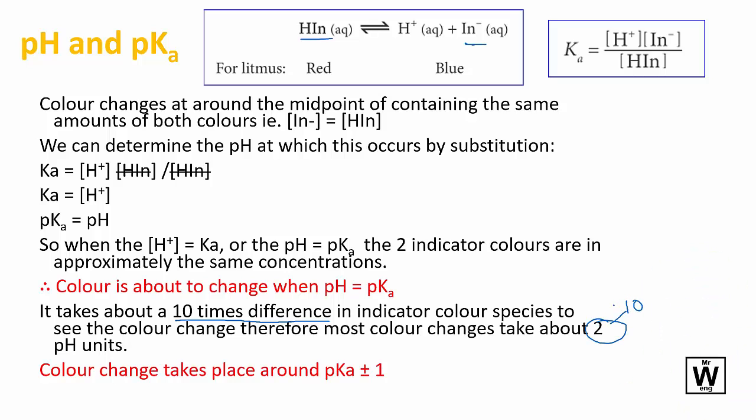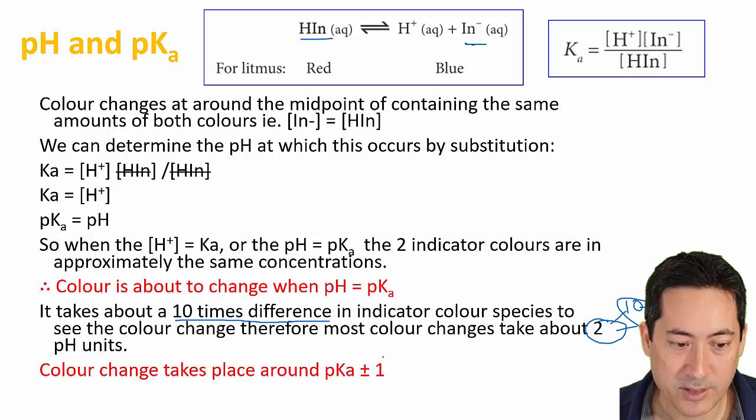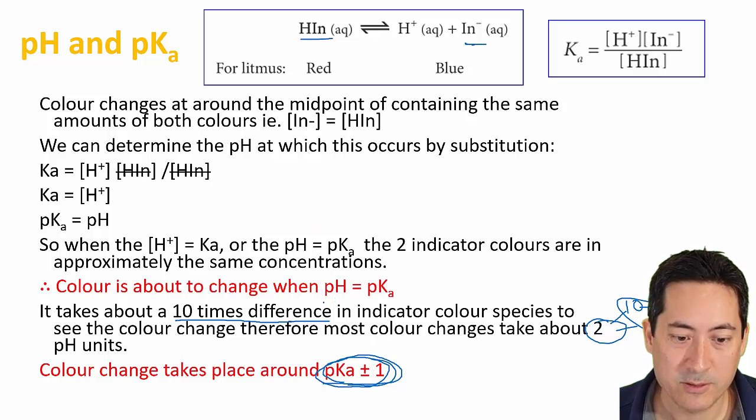You'll see the color change within two pH units. The trick is you need to look at the pKa of the acid-base indicator, and the color change will take place around plus or minus one of that pKa. Why is that the case?